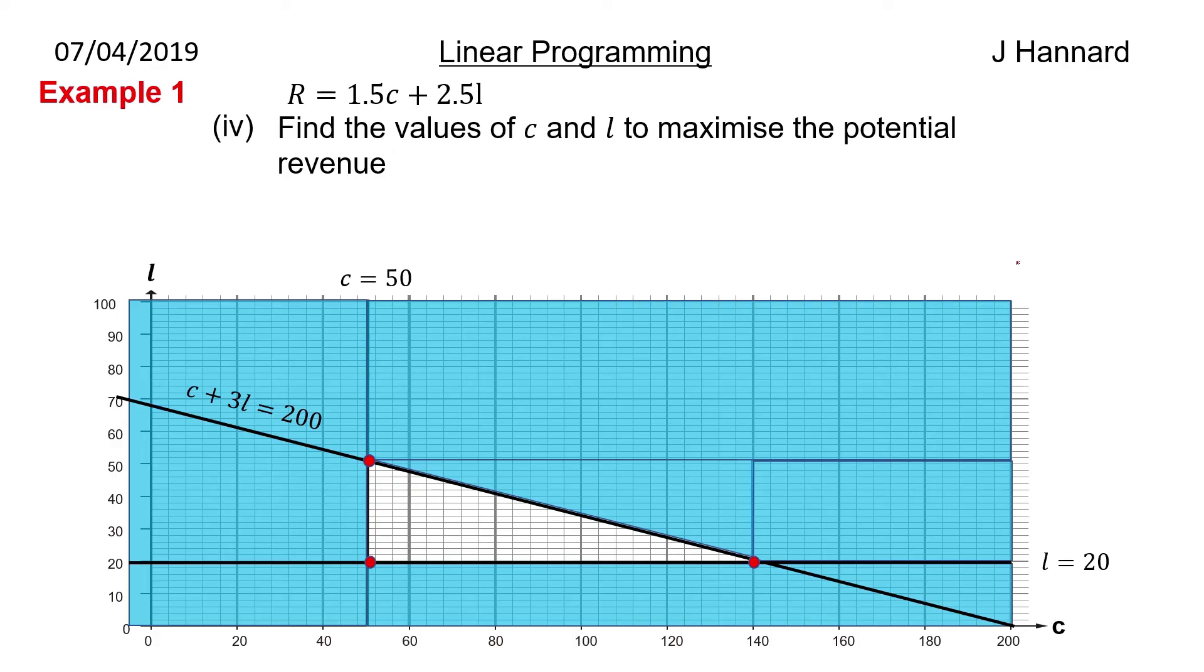So there's our graph once again. We've got three possibilities for the maximum amount of revenue. And these are the three extreme points of the... So we've got this point over here, we've got this point over here, and we've got this point over here. Those are the three possibilities for the optimal amount of revenue that they can get. So let's draw our line R equals 1.5 C plus 2.5 L. So it says find the values of C and L to maximise the potential revenue. So the easiest way to draw this is pick a common multiple of 1.5 and 2.5. I've picked 75. So C equals 50 L equals 30 using the cover-up method. And you draw those on and just do it as a little dash line. That is what I do in an exam.